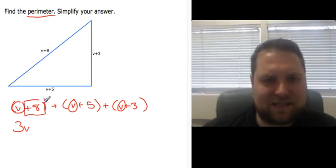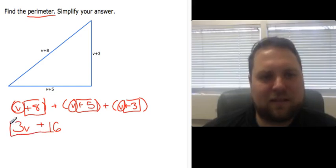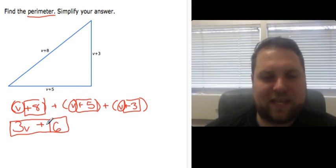The next thing I've got there is a constant term. So I look for all my other constant terms. There they are. 8 plus positive 5 would be 13. 13 plus positive 3 would be 16. Now I would want to put this in standard form. And there it is, 3v plus 16 is my perimeter. So that is all that's being asked on there.